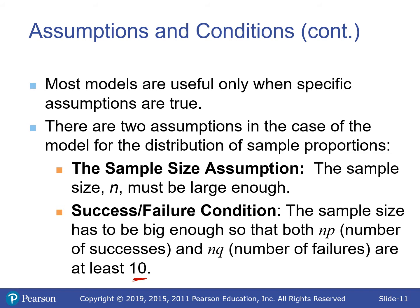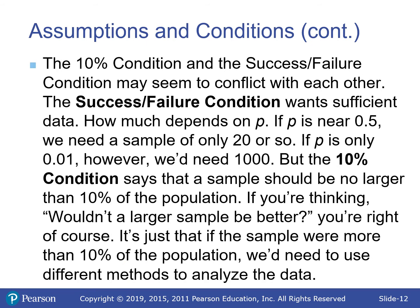We also need the sample size to be large enough so that we have at least 10 expected successes and 10 expected failures — the success-failure condition. This is the same idea as using the normal approximation to the binomial. So we need to expect at least 10 successes and 10 failures.